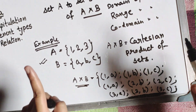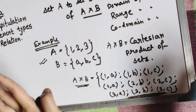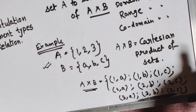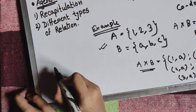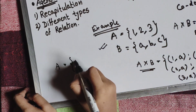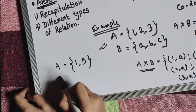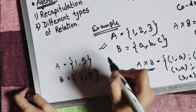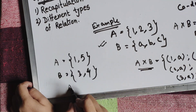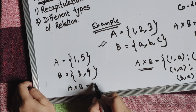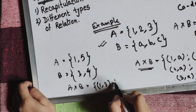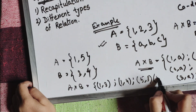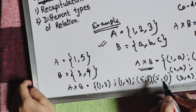Let's take another example to make this very clear. Let A = {1, 5} and B = {3, 4}. Now determine A cross B: it is {(1,3), (1,4), (5,3), (5,4)}. I hope you are getting it now.